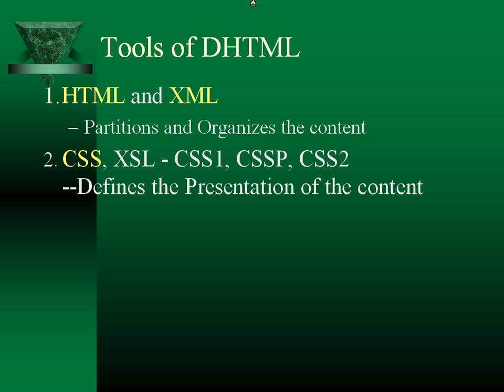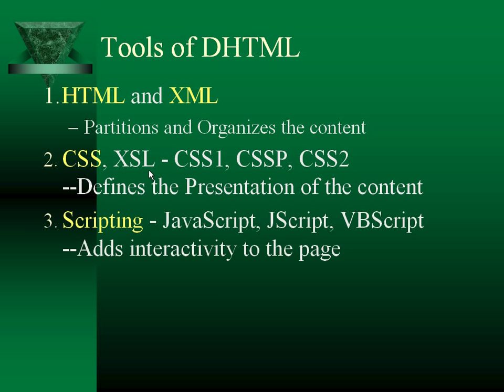The second tool of DHTML is Cascading Style Sheets. CSS are used to define the presentation of the content in the web page.